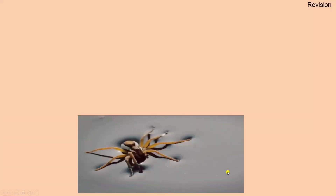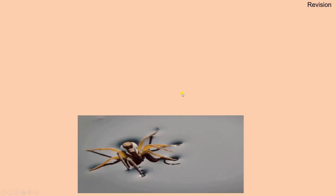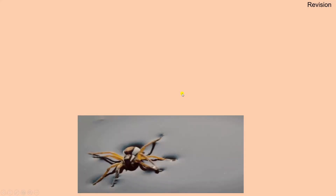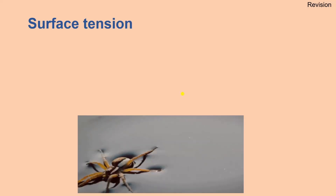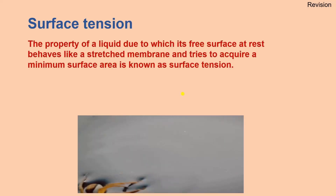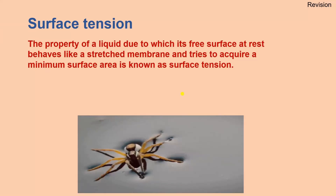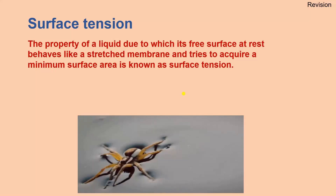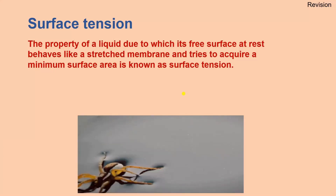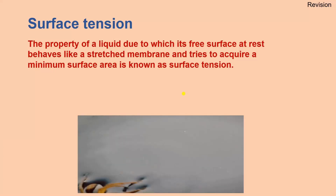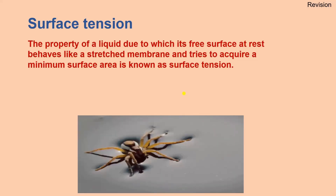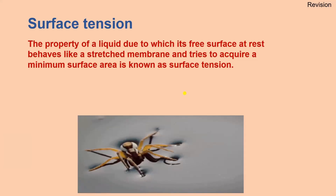Before discussing that topic, we must revise some important terms related to it. We have discussed surface tension. Surface tension is the property of a liquid due to which its free surface at rest behaves like a stretched membrane and tries to acquire the minimum surface area.